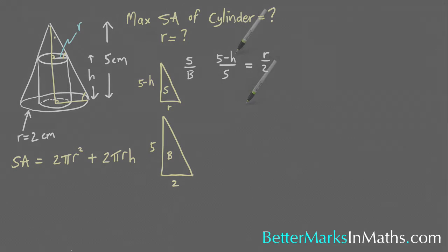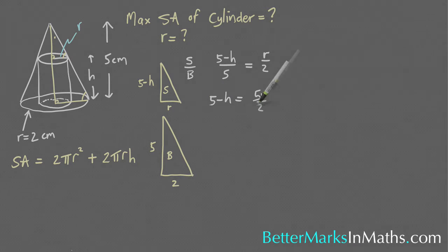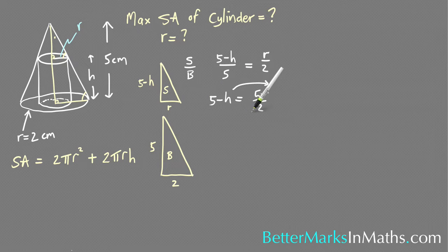Multiplying both sides by 5 to get rid of the 5 on the bottom here you end up with 5 minus h equals 5r on 2. And then moving this to that side and then moving that to that side you get 5 minus 5r/2 is equal to h.